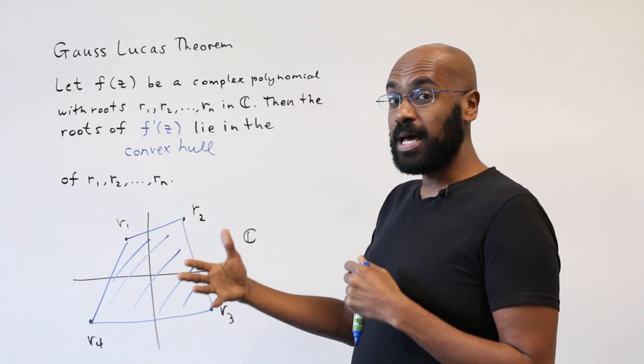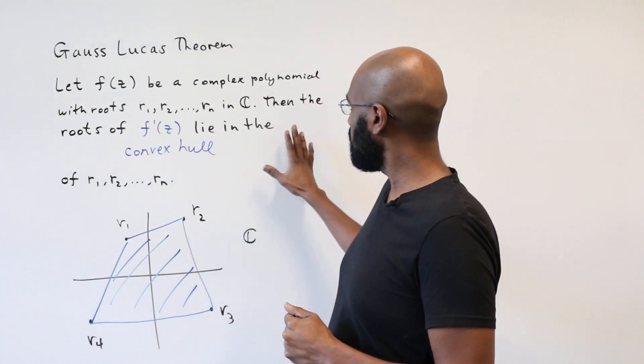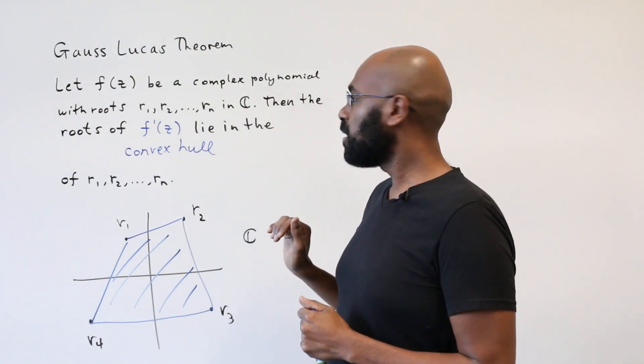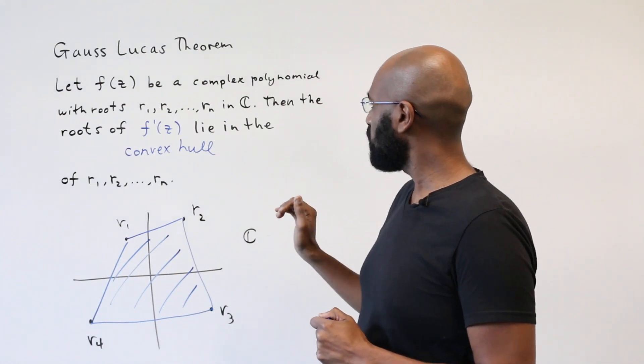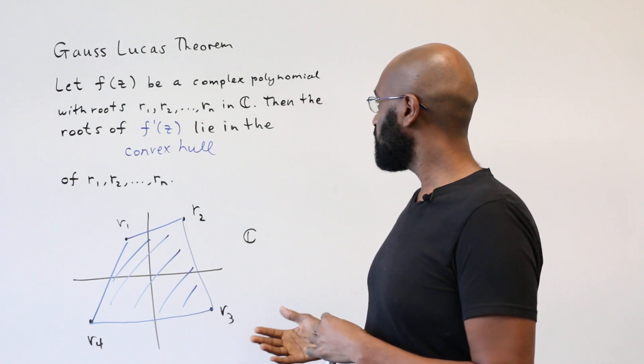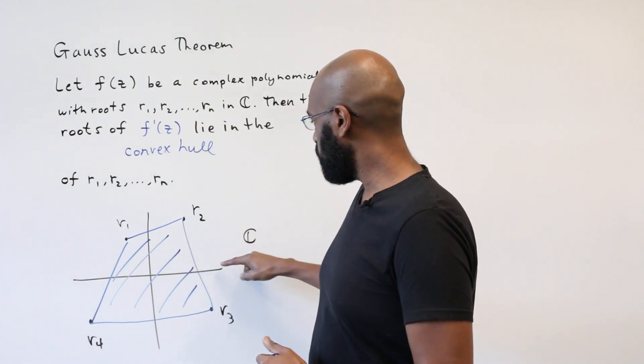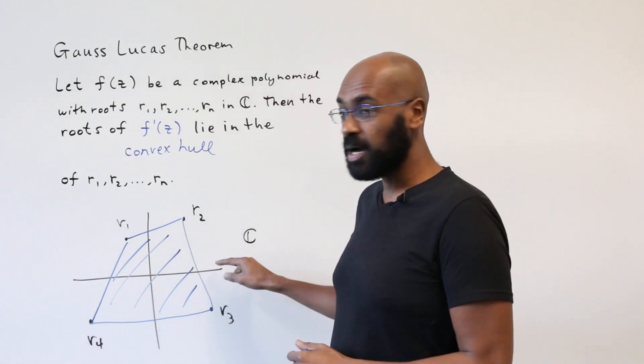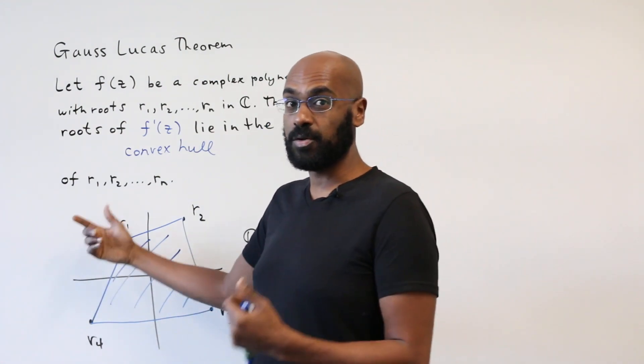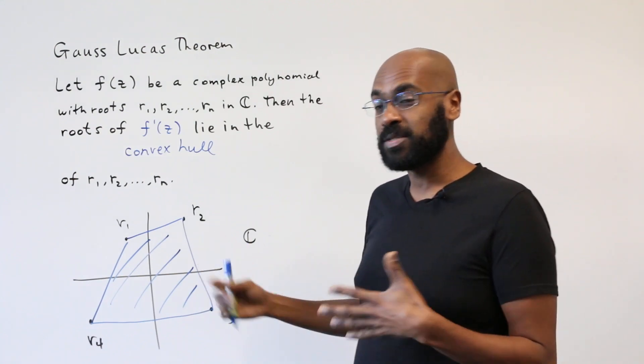And it allows us to see a lot of other things that don't seem to be clear from the theorem directly. For example, if the polynomial f has real roots, this forces the derivative to have real roots because the roots, if they are real, would lie on the real line and the convex hull would be a line segment in the real line. You can prove that another way, but it's a nice consequence of this theorem.